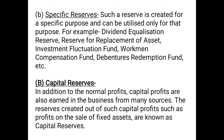The another type of revenue reserve is the specific reserve. Such a reserve is created for a specific purpose and can be utilized only for that purpose. For example: dividend equalization reserve, reserve for replacement of asset, investment fluctuation fund, workman compensation fund, debenture redemption fund, etc. These reserves cannot be used for other purposes other than for which they are specified. For example, replacement of asset reserve can be used only if any asset is to be replaced — not for paying dividends. Similarly, workman compensation reserve can be utilized only to pay compensation to employees or workmen.